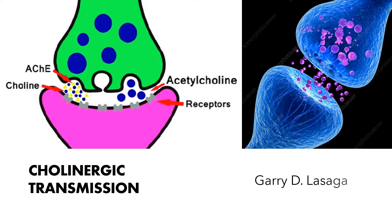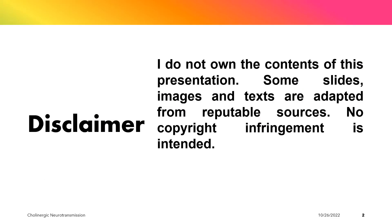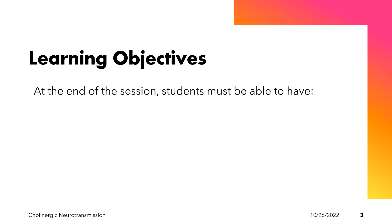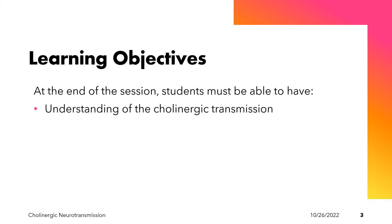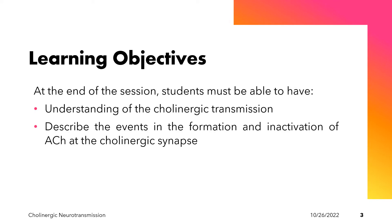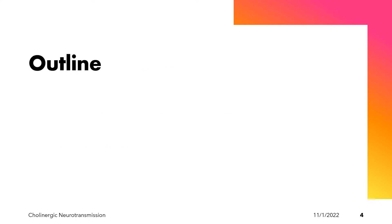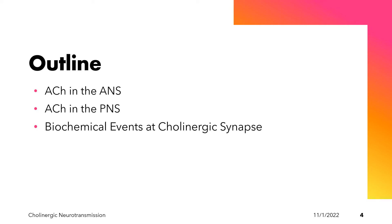Welcome to our presentation on cholinergic transmission. At the end of this lecture, students will be able to have an understanding of cholinergic transmission and describe the events in the formation and inactivation of acetylcholine at the cholinergic synapse. This presentation will talk about the roles of acetylcholine in the ANS and in the peripheral nervous system, and the biochemical events at the cholinergic synapse.